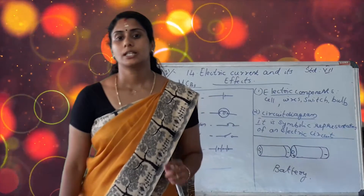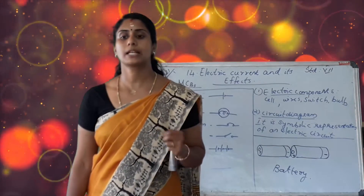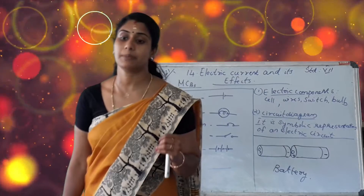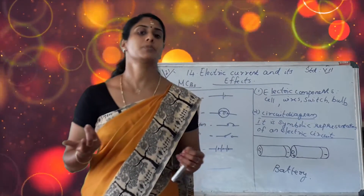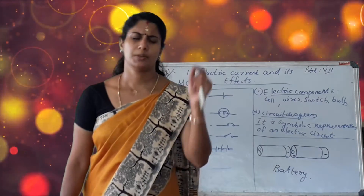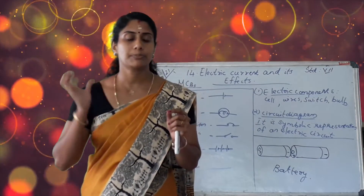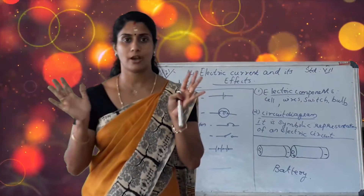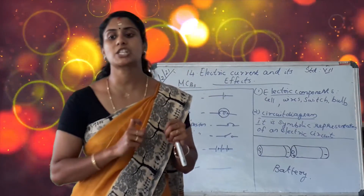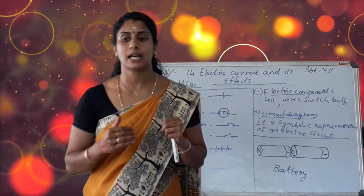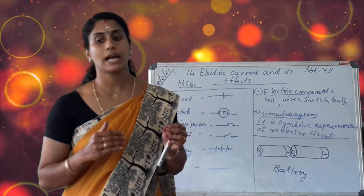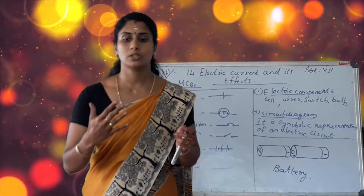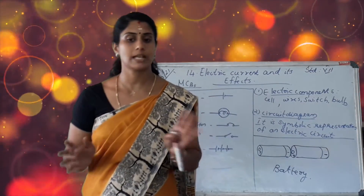Last point: electric fuses. Wires made from some special materials melt quickly and break when a large electric current passes through them. These materials are used to make electric fuses, which prevent fire and damage to electrical appliances.